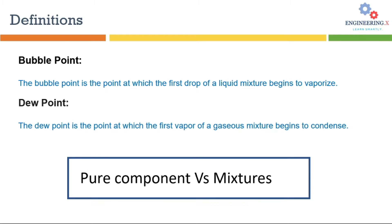So let's first recall some important definitions. What is bubble point? The bubble point is the point at which the first drop of a liquid mixture begins to vaporize. On the other hand, dew point is the point at which the first vapor of a gaseous mixture begins to condense.